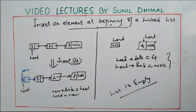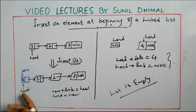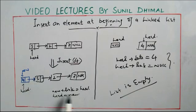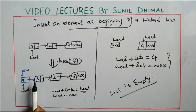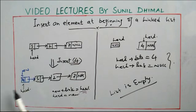So to summarize: if the list is empty, insert directly into head. If the list is not empty, create memory for a new node, set the data, make the link point to head, and then make head point to the new node — which becomes the first node.